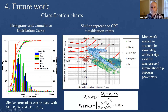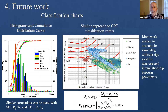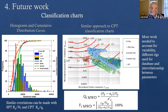For future work, we're looking at possibly developing classification charts — looking at histograms and cumulative distribution curves to see if data follows a normal law, examining frequency versus the Schimazek index for different types of material. We're also working with a very large database from a consultant in France, trying to do something similar to what Robertson and Campanella have done in terms of classification charts using the CPT. There's a lot more work that needs to be done, but you can possibly get some sort of chart like that, which would be really cool.